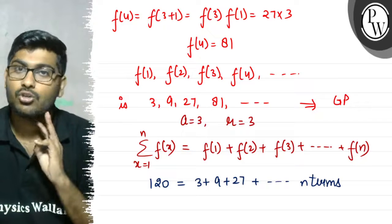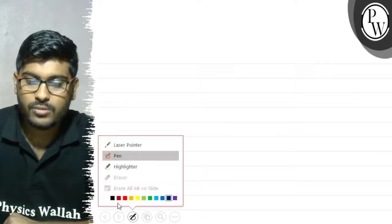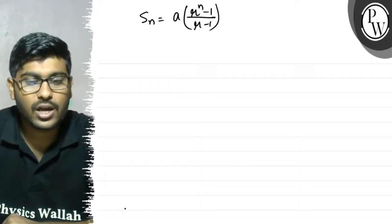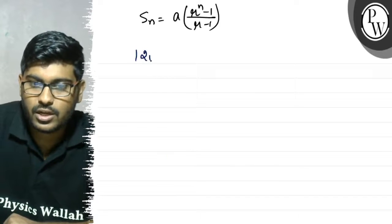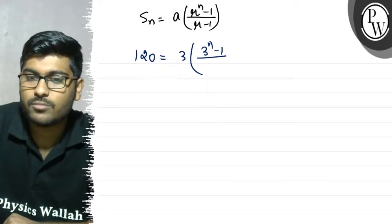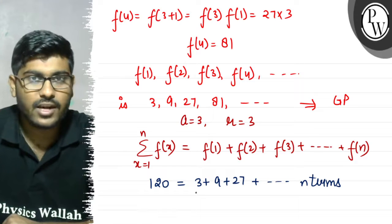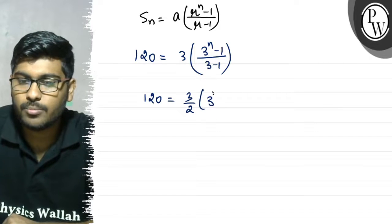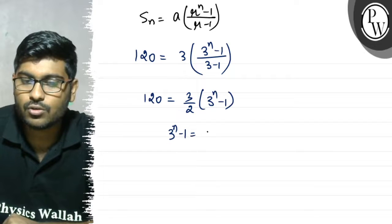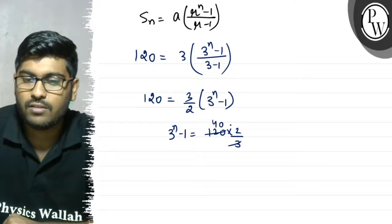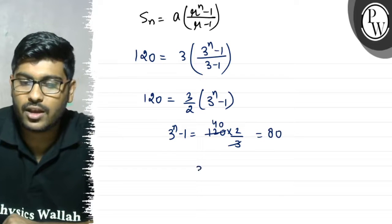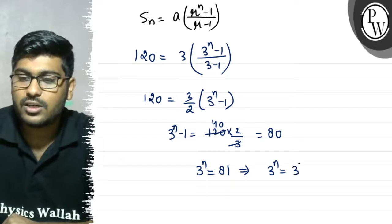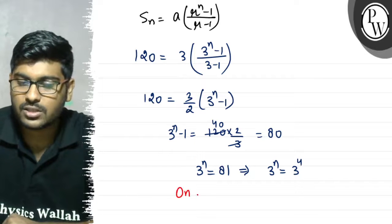We know that the sum of n terms of a GP is a·(r^n - 1)/(r - 1). So here, 120 = 3·(3^n - 1)/(3 - 1). That gives us 120 = (3/2)·(3^n - 1), so 3^n - 1 = 120·(2/3) = 80. Therefore 3^n = 81, which equals 3^4.